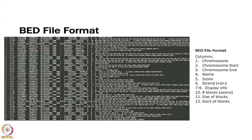Here is an example BED file. The first column is the chromosome, the second and third are gene start and gene end, followed by a name, a score, a strand, and display info for genome browsers. There are also columns for the number of exons or blocks, the size of the blocks, and the start of the blocks.